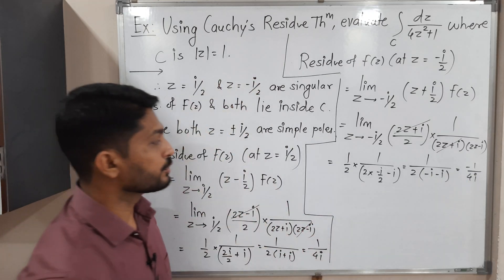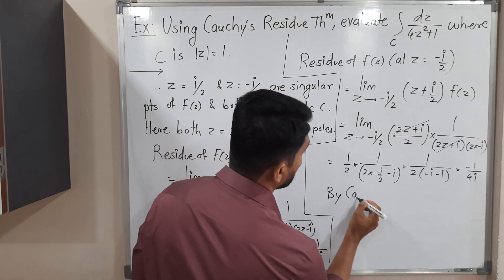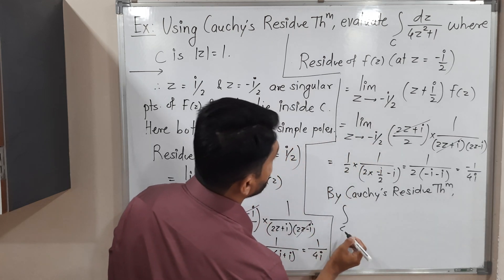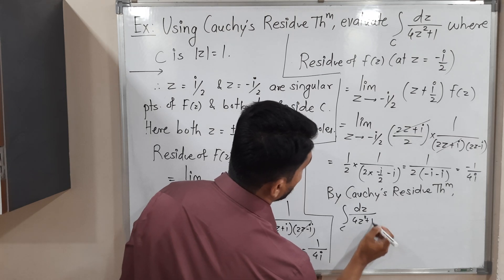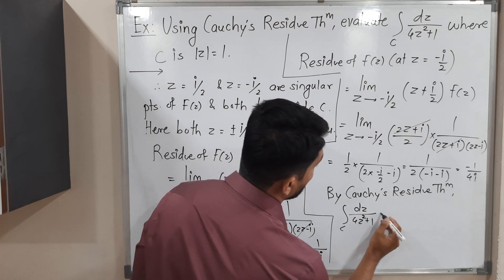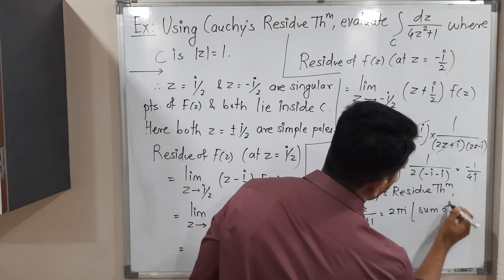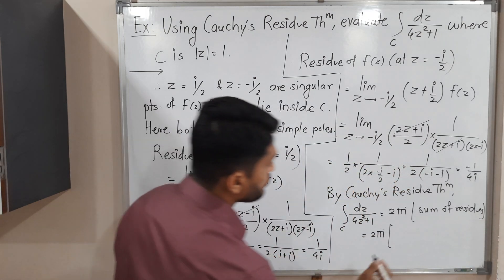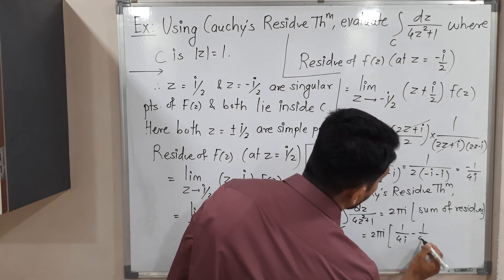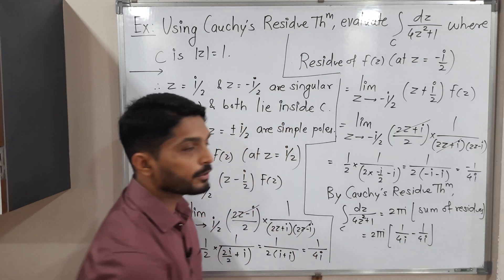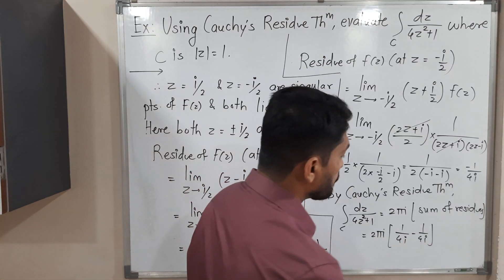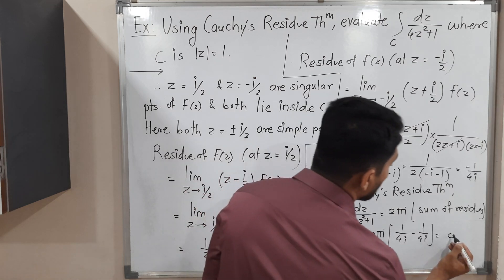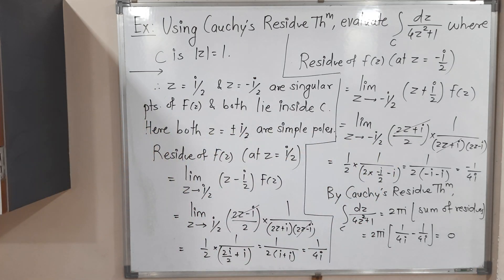Now we use Cauchy's residue theorem. The integral over C of dz upon (4z squared plus 1) equals 2πi times the sum of residues, which is 2πi times (1/(4i) plus (minus 1/(4i))). Both terms have the same magnitude but opposite signs, so they cancel each other, giving 0. Therefore the value of the integration is 0.